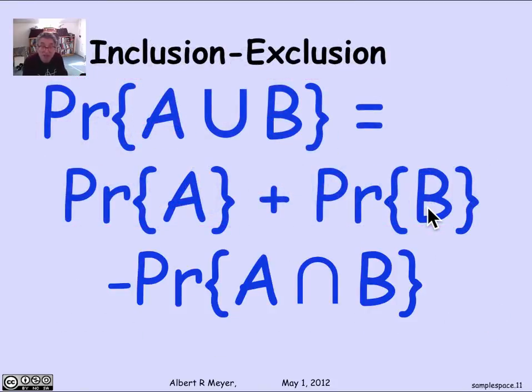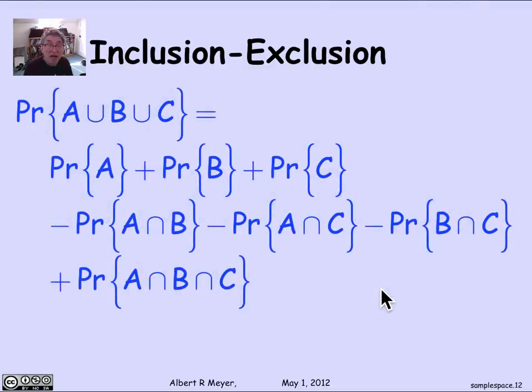Similarly, we have inclusion-exclusion. If A and B are not disjoint, then the probability of A union B equals the probability of A plus the probability of B minus the probability of the intersection. The proof is exactly like the corresponding rule for cardinalities of finite sets. And of course, it generalizes to more sets. This is an example of the inclusion-exclusion for three sets in terms of probability.